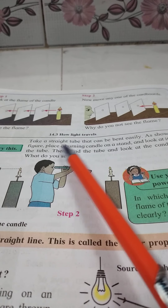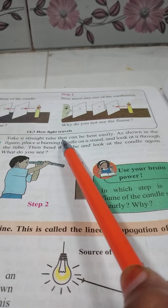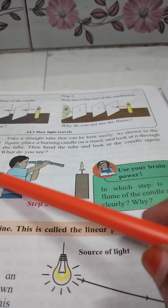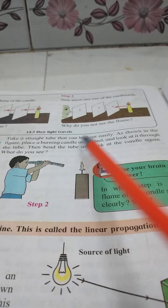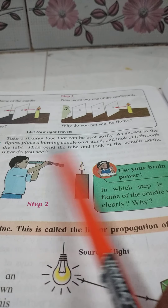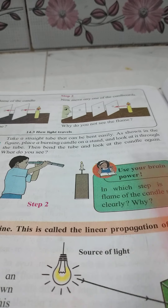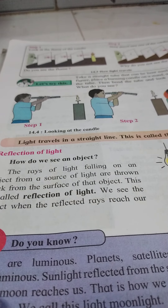Take a straight tube that can be bent easily, as shown in the figure. Place a burning candle on the stand and look at it through the tube. Then bend the tube and look at the candle again. What do you see? Light travels in a straight line.